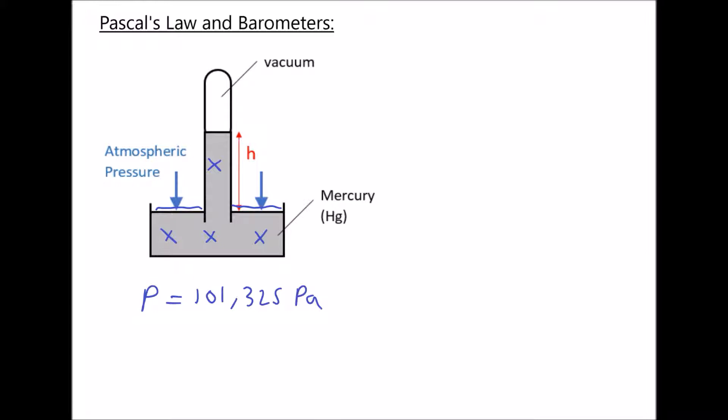Now in a barometer, the liquid that we use is typically mercury. And mercury has the chemical symbol Hg. And it has a density of 13,600 kilograms per meter cubed. Therefore the deeper down in mercury you go, the higher the pressure you'd experience.